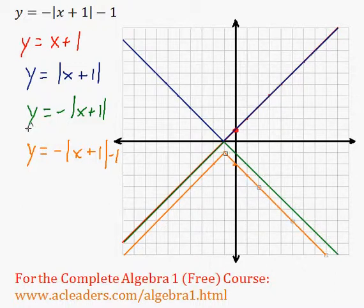So now the orange graph is y equals the negative absolute value of x plus 1 minus 1. And that's it.